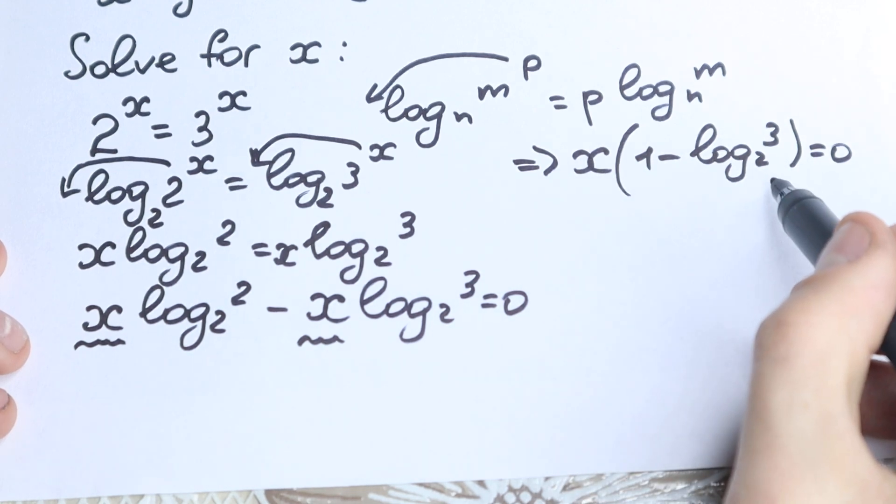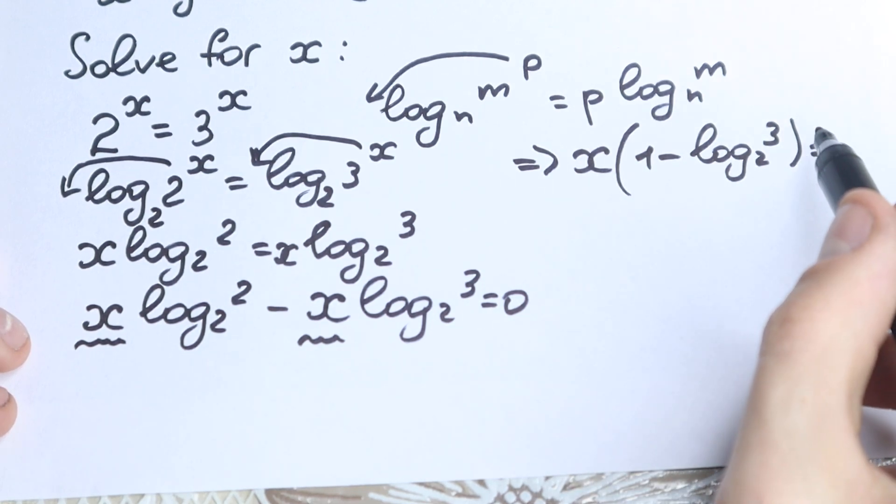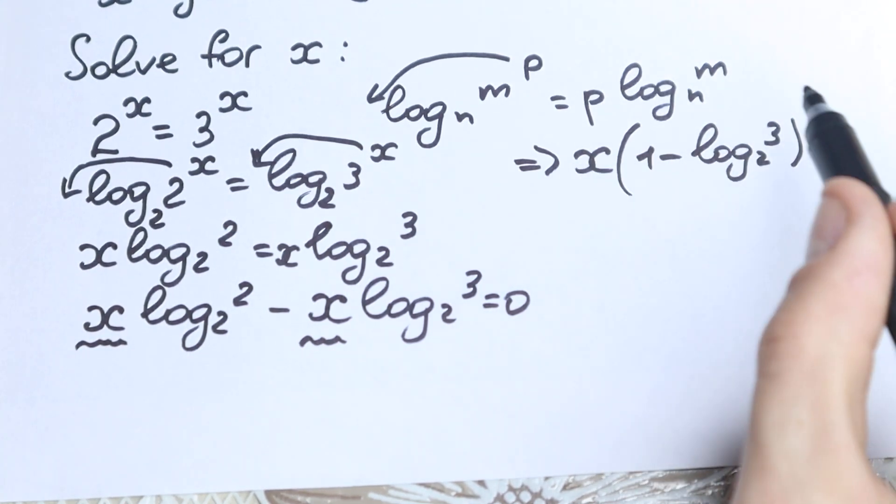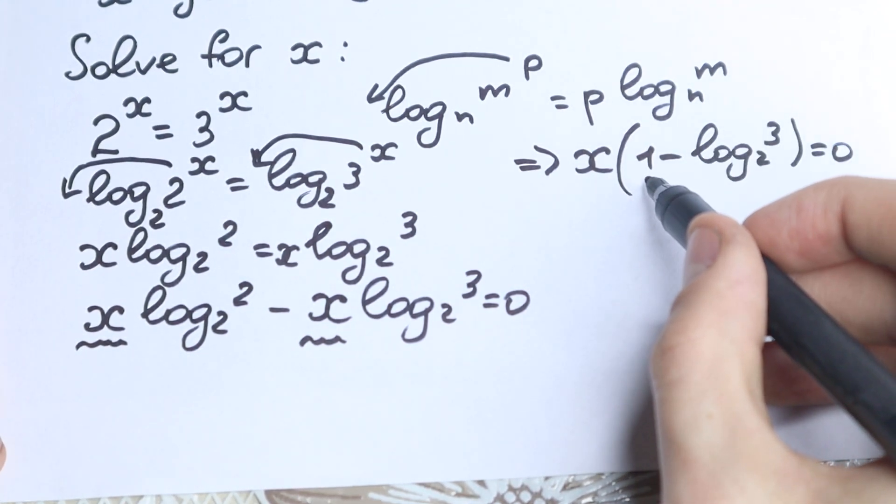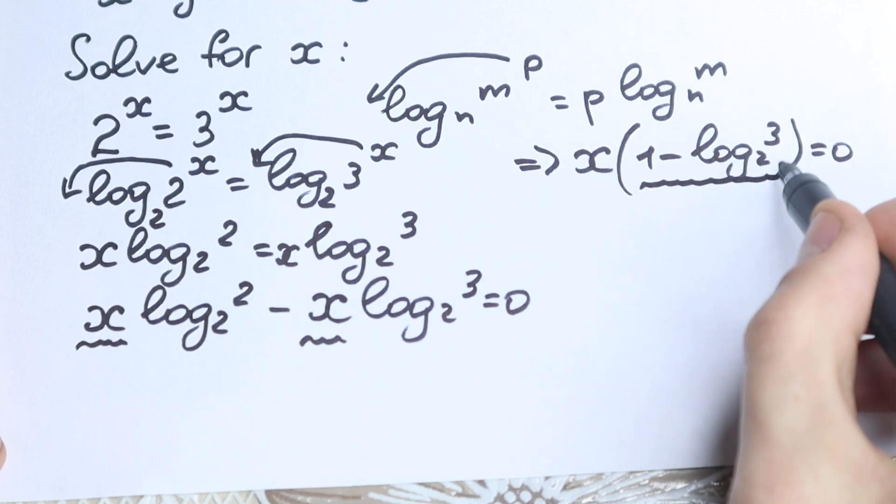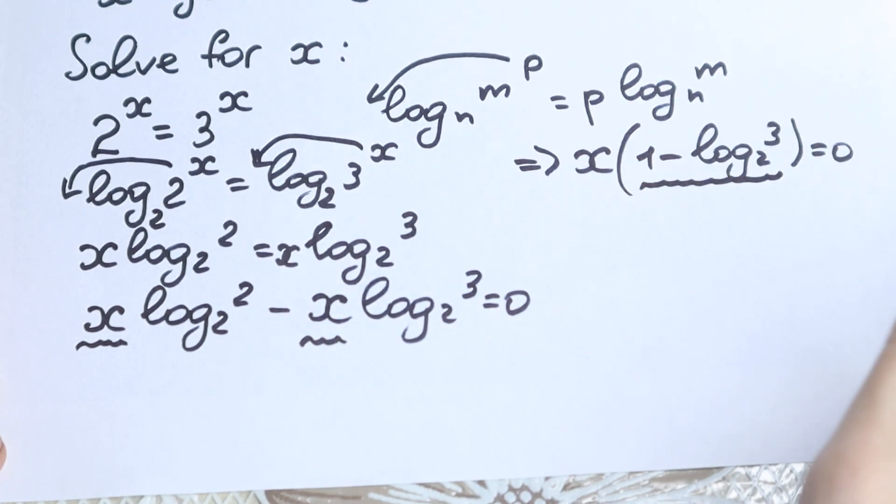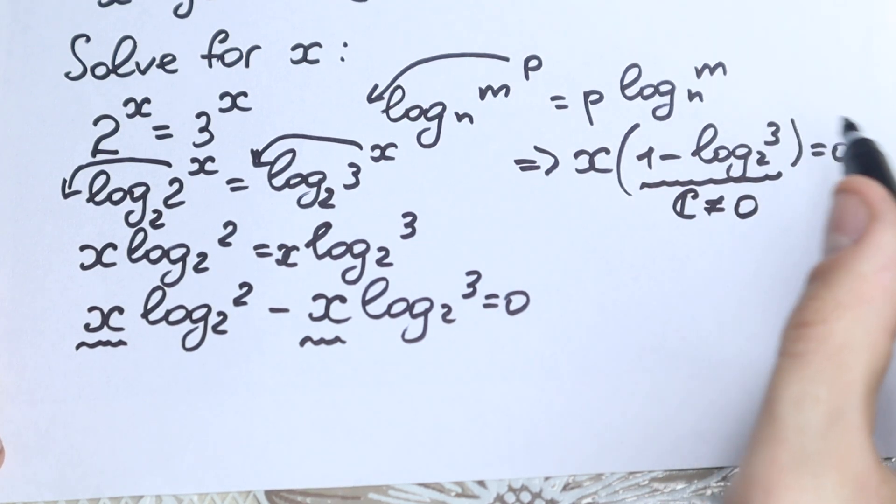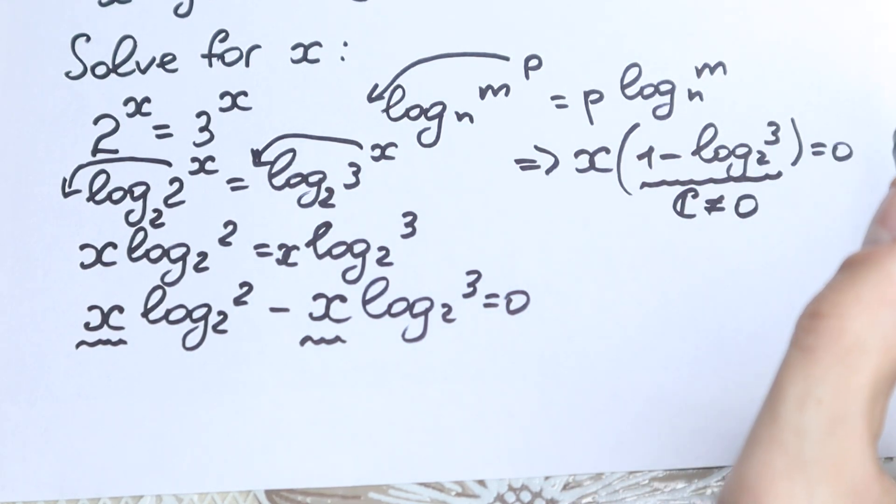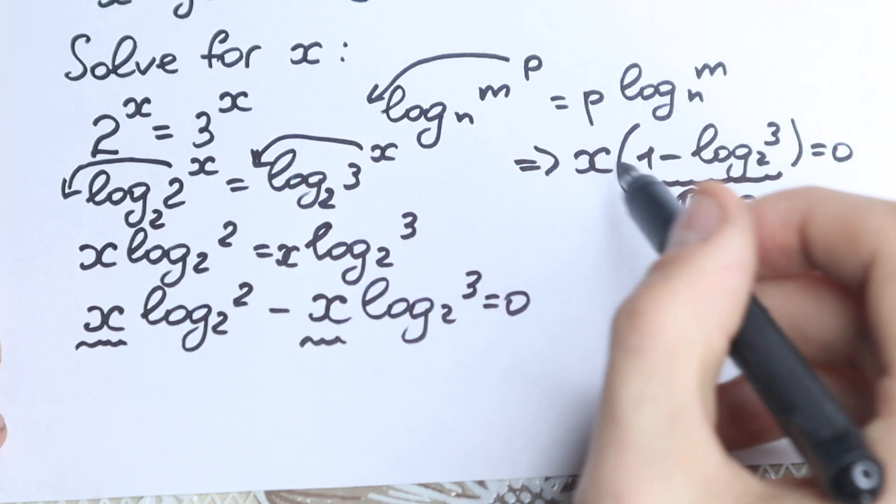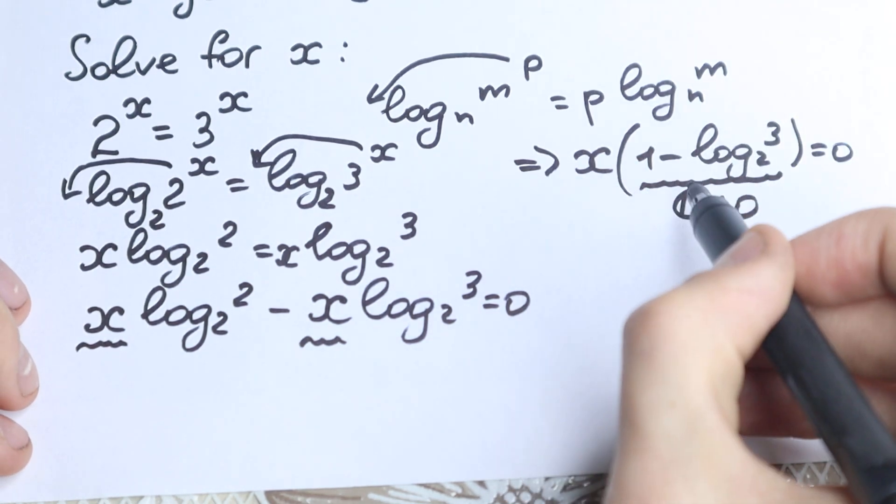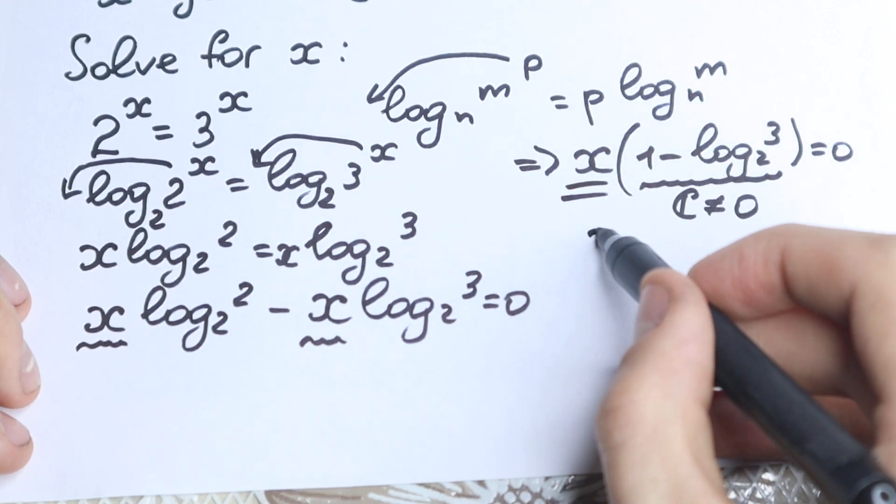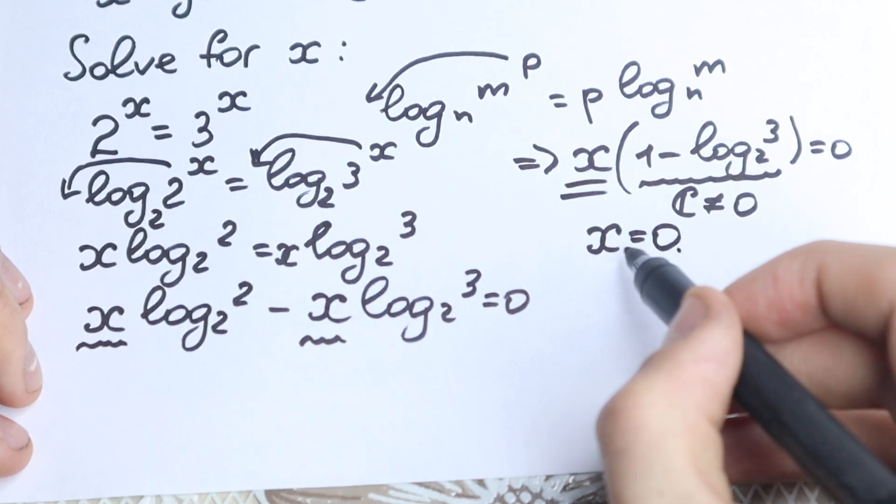What is our x? We have a product of two values. But if we look closely at this parentheses, we have a constant which is obviously not equal to 0. So all the hopes are on this x. The only way this equation has a root is when x equals 0. When the parentheses is not equal to 0, then x must be equal to 0. So x equals 0. This is our answer.